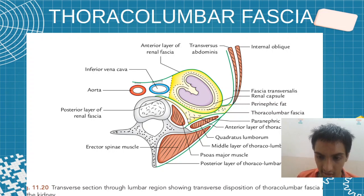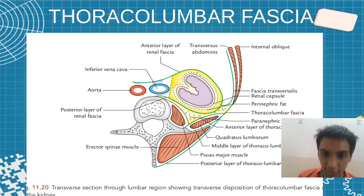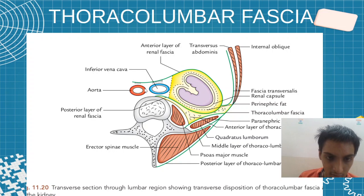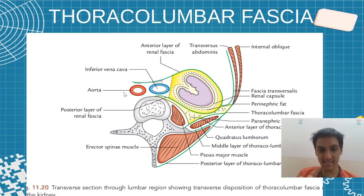Here is the psoas major muscle. This is the renal fascia covering the kidney with the anterior and the posterior layers. We have the peri and paranephric fat. We have the IVC and the aorta — IVC as in inferior vena cava.